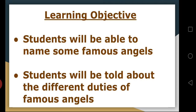Let's move towards the learning objectives. Today's first learning objective is: students will be able to name some famous angels. When we read pages 19 and 20, we will read about the angels. The second learning objective is: students will be told about the different duties of famous angels. You may remember that in the last lesson we discussed that angels do not do anything bad and they do not do anything without the order of Allah the Almighty.